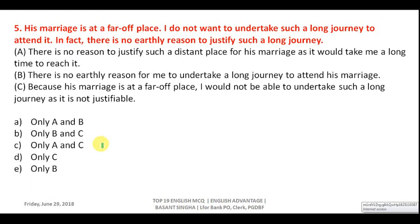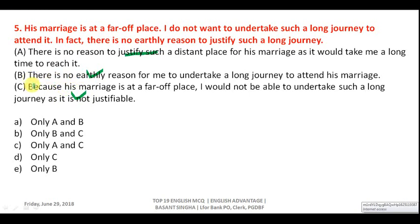Question five: 'His marriage is at a far off place; I do not want to undertake such a long journey; there is no earthly reason to justify such a long journey.' Option A says 'no reason to justify such a distant place' — wrong, as the sentence is about a journey, not a place. Option B: 'There is no earthly reason for me to undertake a long journey to attend his marriage' — correct. Option C: 'I would not be able to undertake such a long journey as it is not justifiable' — also correct. Answer is B, meaning B and C.